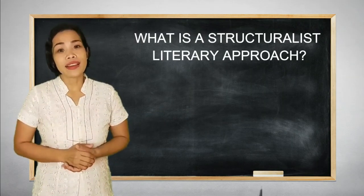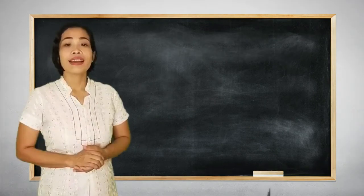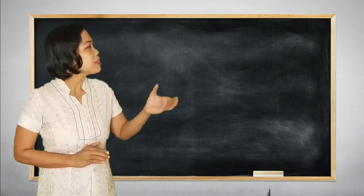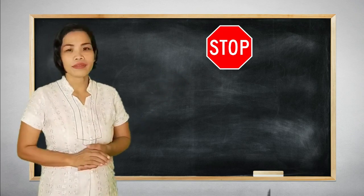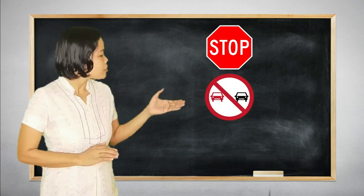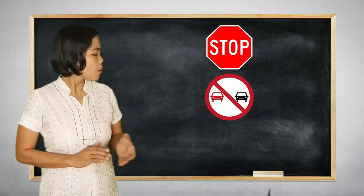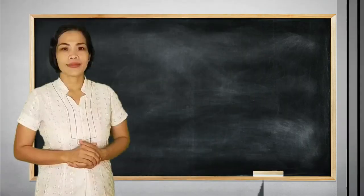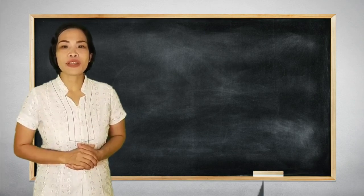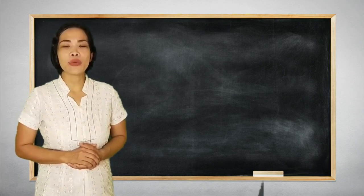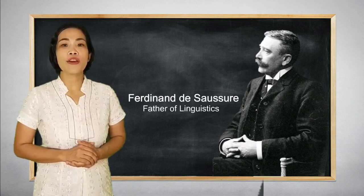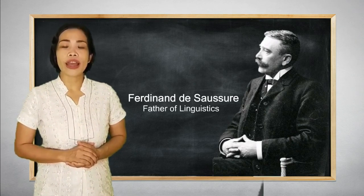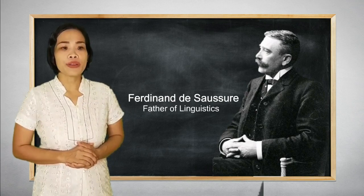So what is a structuralist literary approach? Let's take a look at the following traffic and road signs. The origin of structuralist theory is connected with the work of the French linguist Ferdinand de Saussure, along with other linguists from Prague and Moscow. In brief, Saussure's structuralist linguistics propounded three related concepts.